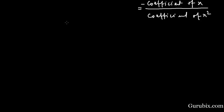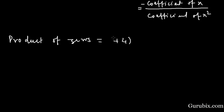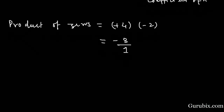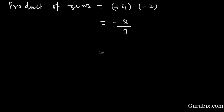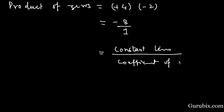Now we shall find the product of zeros. The product of zeros is plus 4 into minus 2, which equals minus 8. We can write this as minus 8 over 1. This ratio equals the ratio of the constant term over the coefficient of x squared. So this relationship is also verified.